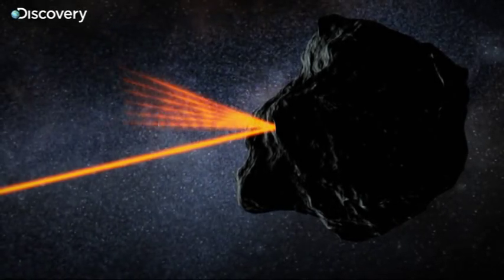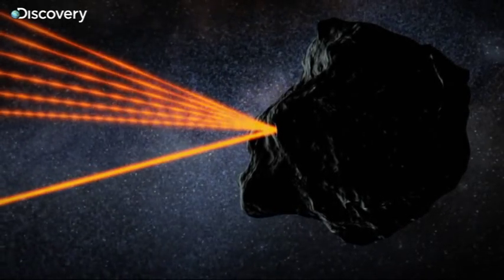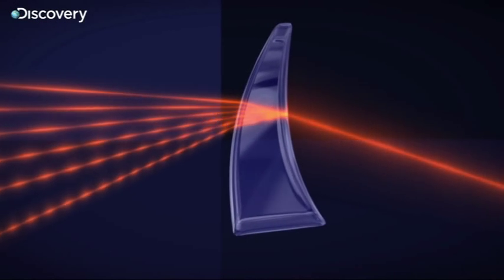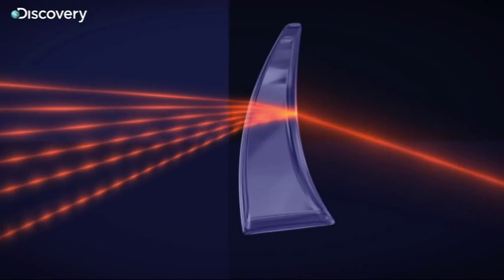Different materials reflect light in different ways. Analyzing that reflected light will give them an idea of the composition of Kuiper Belt objects.